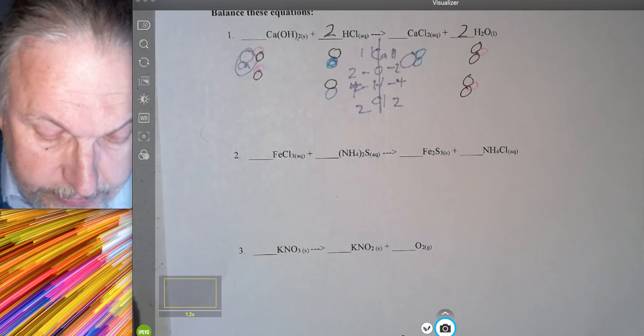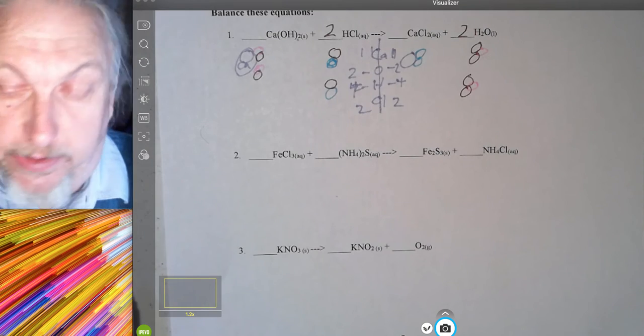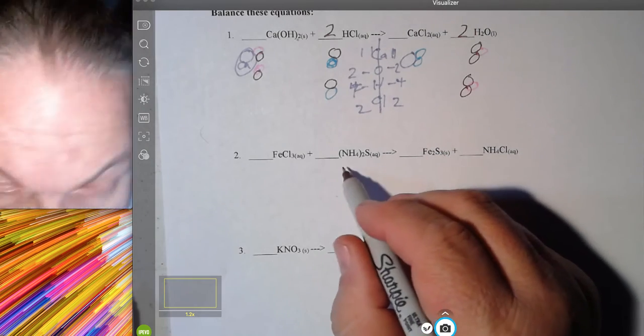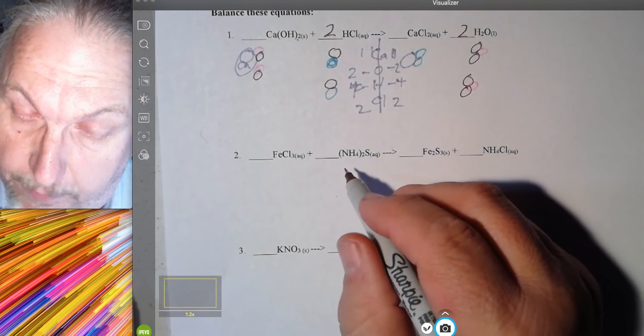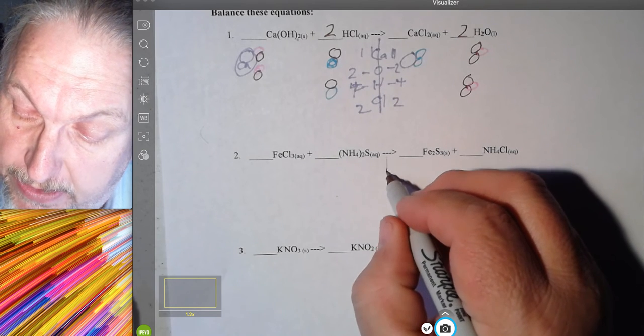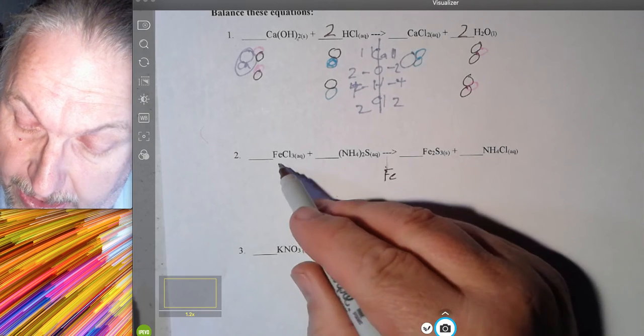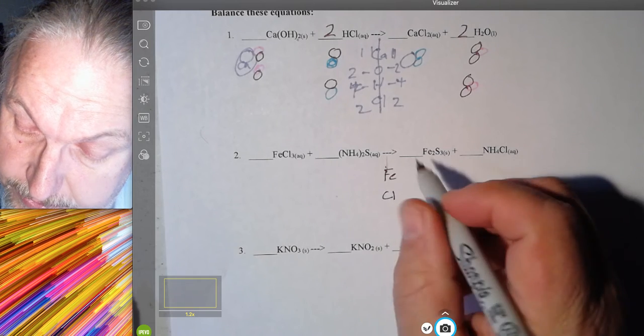Now the next method I'm going to use, and we'll still use some different colors, is just the way to balance. So if we think about it, we're going to make sure that we have the same elements on this side as we do on that side. Or the reactive side is going to equal the product side. So I'm going to put the first element I see, which is iron. I've got chlorine there, Cl.